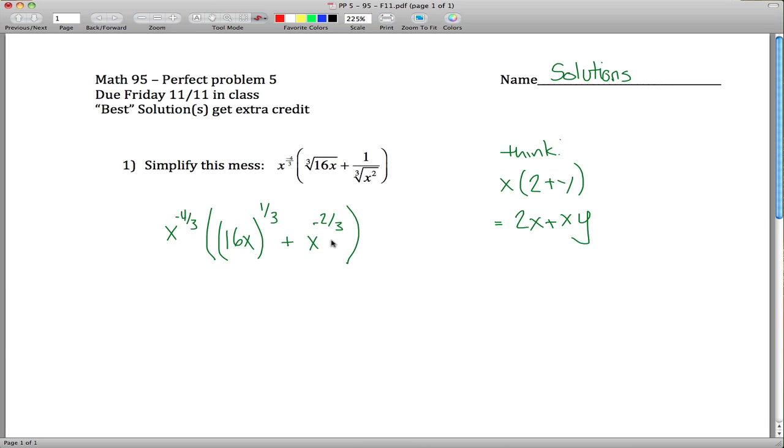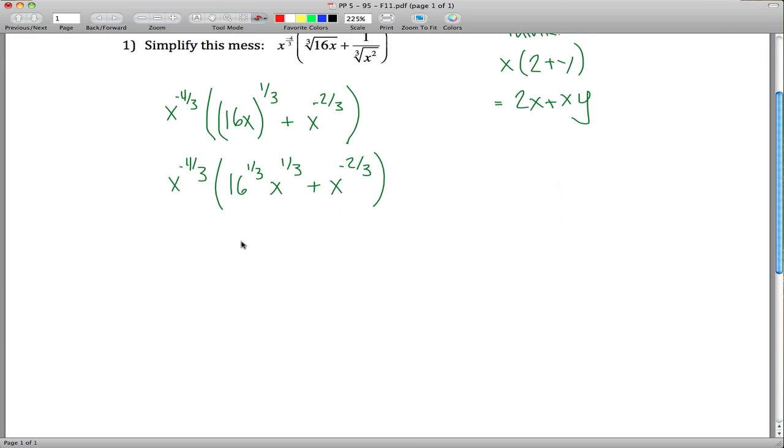Instead of 16x raised up to the 1 third, I'd break that down to 16 to the 1 third x to the 1 third. That's one of our exponent rules you can use there. And the reason why is because now when we distribute things through, I think it will work out pretty nicely.